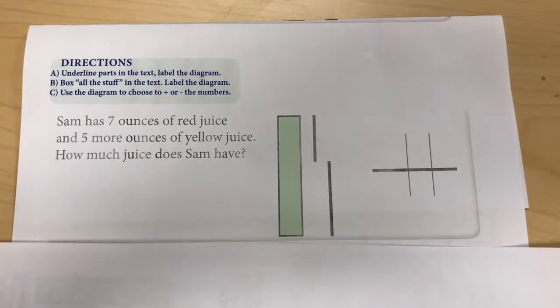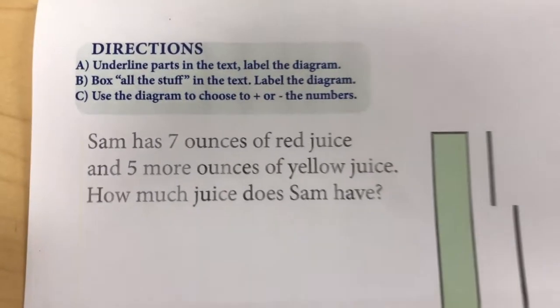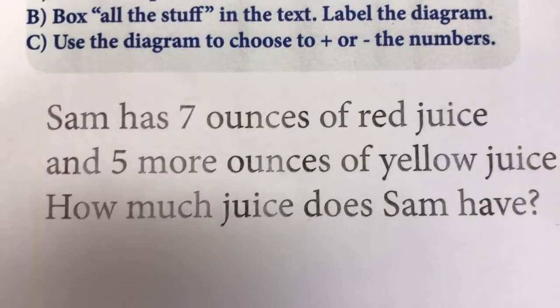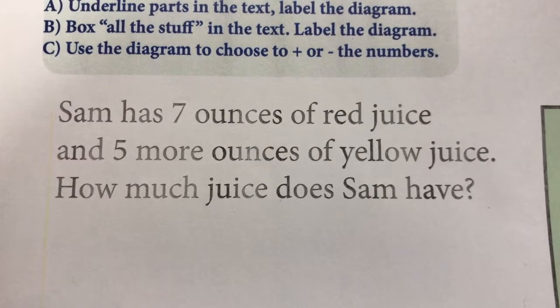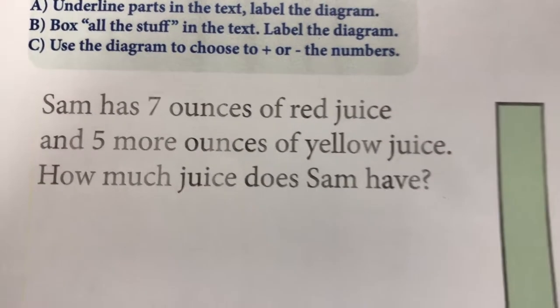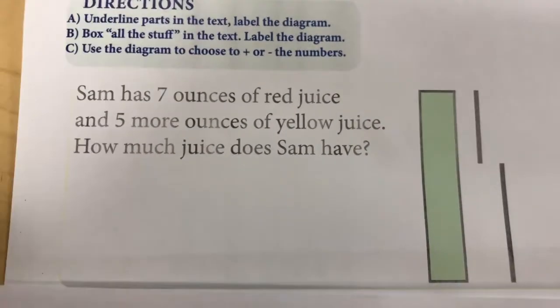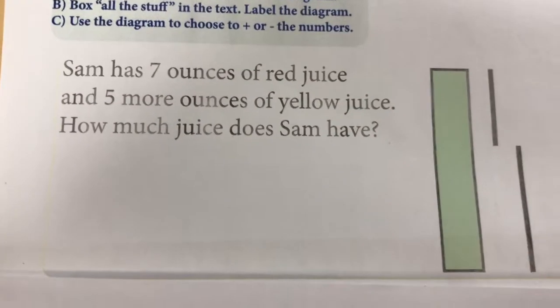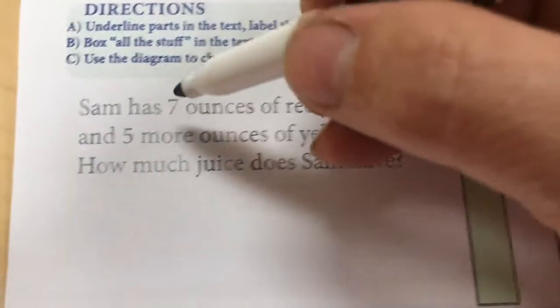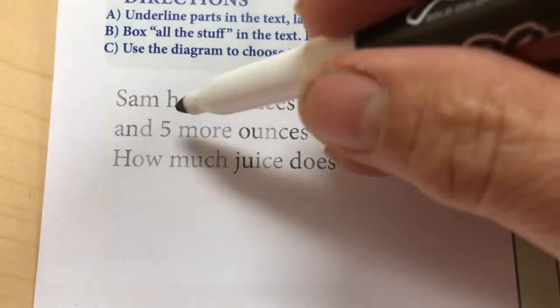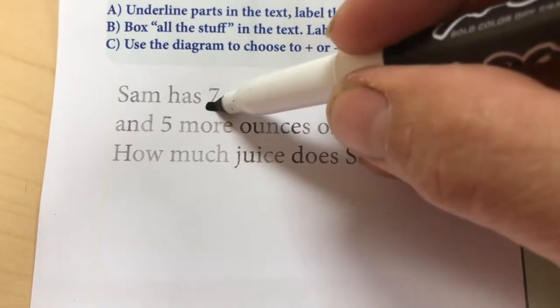Here's how an addition problem looks on paper. Sam has 7 ounces of red juice and 5 more ounces of yellow juice. How much juice does Sam have? We're going to use the diagram to extract that information and put it in a meaningful context. First thing I'm going to do is look at this information. I am identifying this as a part, 7 ounces.